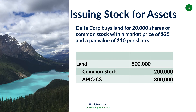What if we issue stock for assets like land — we're buying land by issuing stock? Here, 20,000 shares of common stock with a market price of $25 and a par value of $10. So 20,000 times $25: land is going to be debited, increasing land for $500,000. Our common stock has to be at par, which is 20,000 times $10, that's $200,000, and any remainder then would go into additional paid-in capital, or APIC, for the $300,000.